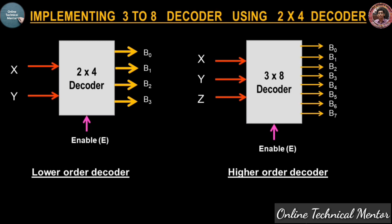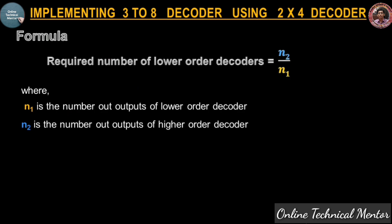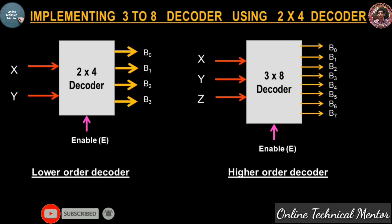We need to find out how many 2-to-4 decoders are required to implement the 3-to-8 decoder. There is a formula: required number of lower order decoders = n2 / n1, where n1 is the number of outputs of the lower order decoder and n2 is the number of outputs of the higher order decoder.